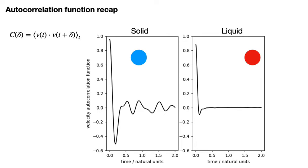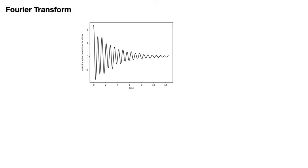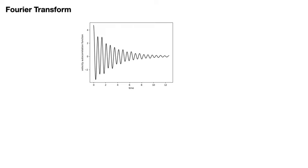Having recapped the theory of the autocorrelation function, we can now move to the new theory that I would like to introduce in this video. To motivate the ideas that I would like to introduce here, I would like you to look at the example autocorrelation function that I have drawn on this slide. This function perhaps looks pretty complicated, but it is actually rather simple. I constructed it by taking a linear combination of the three functions that have just appeared on the left of the slide, and the particular linear combination I took is indicated at the top of the slide.